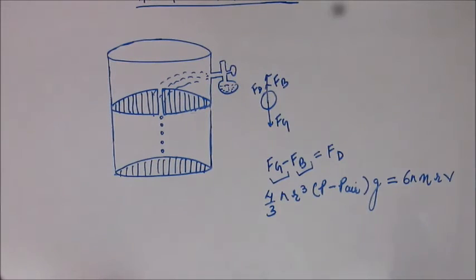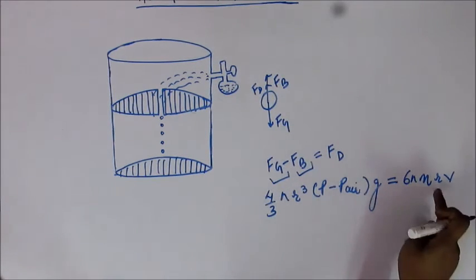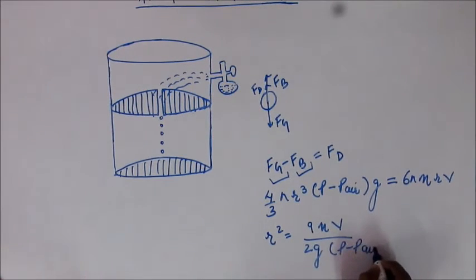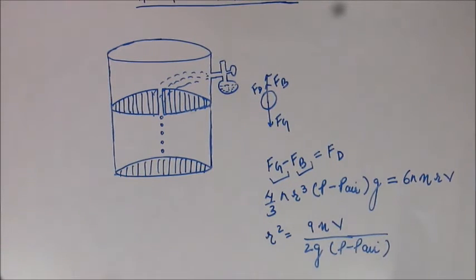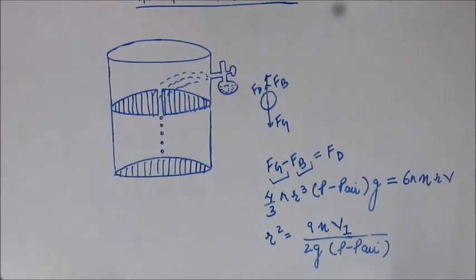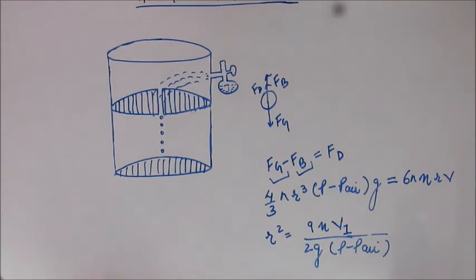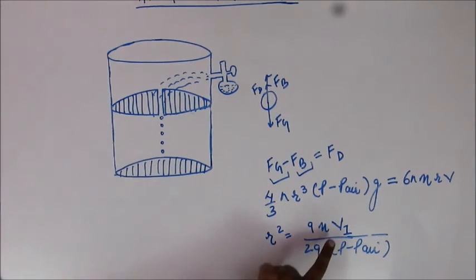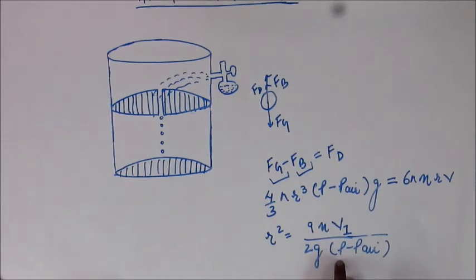The left-hand side is not directly known because r is not known, but you can cancel one r from both sides and rearrange to get: r² = 9ηv / (2g(ρ_oil − ρ_air)). Let us call the terminal velocity in this first phase v1, since in the second part of the experiment there will be another velocity v2. Since the densities of oil and air are known, finding the velocity v1 will give the value of the radius r.